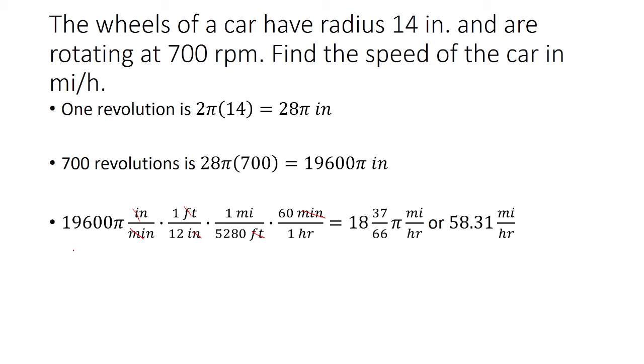And so really what this turns into is just multiplying 19,600π with 60, and then dividing it by 5,280 and 12 to get 18 and 37 over 66 π miles per hour, or 58.31 miles per hour.